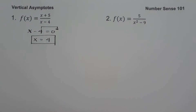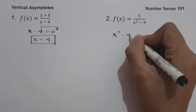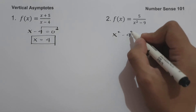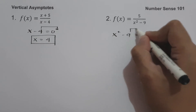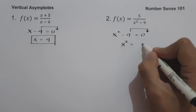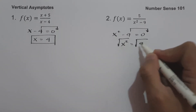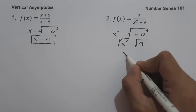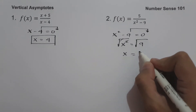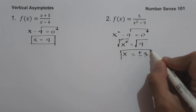On number 2, we have f of x equals 5 over x squared minus 9. So let us equate x squared minus 9 equal to 0. Let us move negative 9 on the other side of the equation. This will be x squared equals 9. To simplify, let us take the square root of both sides. So x equals the square root of 9, that is positive and negative 3. So this will be our vertical asymptote.